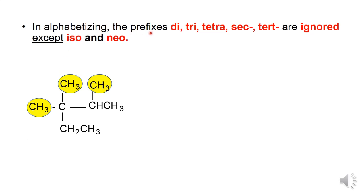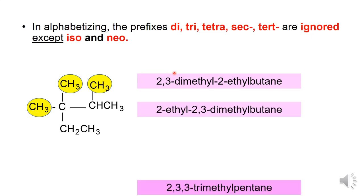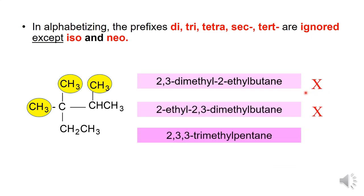In alphabetizing, the prefixes di, tri, tetra, sec, and tert are ignored, except iso and nor. There are three IUPAC names given. The first and second IUPAC names are wrong because butane is not the parent name — it is not the longest carbon chain in the structure. The correct name is number 3: pentane is the longest chain of carbon in the structure. There are three identical substituent groups bonded to carbons 2 and 3, which uses the prefix tri. So the IUPAC name is 2,3,3-trimethyl-pentane.